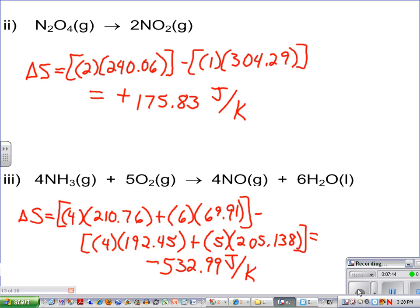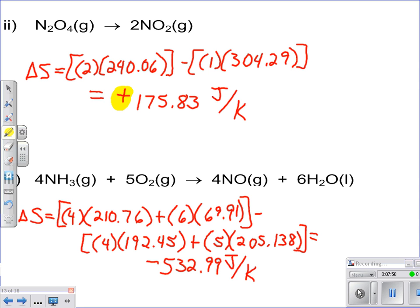Okay, so now we see that we go through the calculations. And just like we predicted, this is a positive one for our second problem. We have a positive delta S value, just like we predicted. And we have a negative delta S value, just like we predicted on the last one as well.